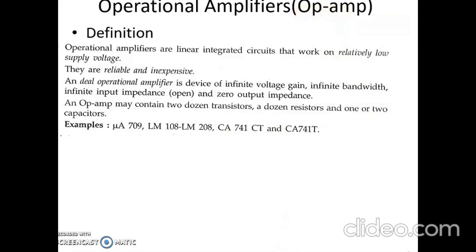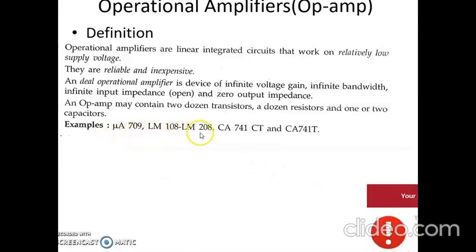Operational amplifiers are linear ICs that work on relatively low supply voltage and are reliable and inexpensive. An ideal op amp has infinite voltage gain, infinite input impedance, and zero output impedance. It contains many transistors, resistors, and a few capacitors. Common examples include μA 709, LM 108, and LM 208.